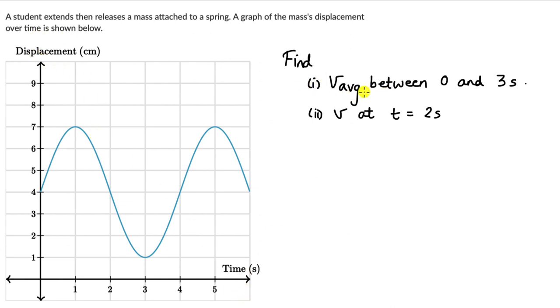We can see a displacement-time graph. We need to figure out average velocity between 0 and 3 seconds, and the instantaneous velocity v at time t equals 2 seconds. As always, pause the video and first try this one on your own.